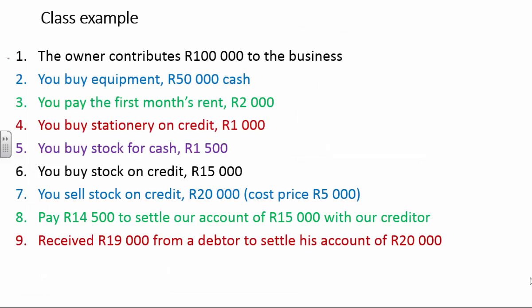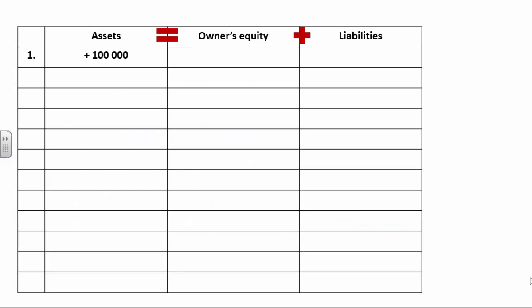Let's start with the first transaction: the owner contributes R100,000 to the business. The owner is contributing money, so the money goes into the bank. Bank falls under assets, so my assets will be increasing. When the owner contributes something, it's an owner transaction falling under owner's equity. From the business's perspective, when it receives money from the owner, it's capital — because owner transactions are either capital or drawings. Money in is capital, money out is drawings. So owner's equity is increasing.